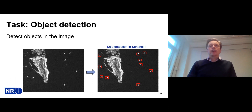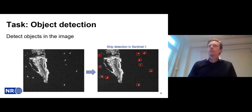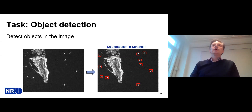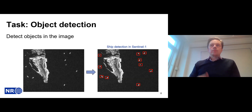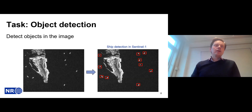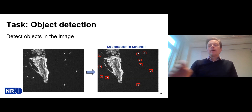Object detection is another task we perform — locating given objects or several types of objects in an image. A very popular task is detecting ships from SAR images. Today there are services, such as Copernicus services, that detect ships in Norwegian waters. We have also done similar tasks for detecting seal pups resting on ice outside Greenland, classifying them into different species.